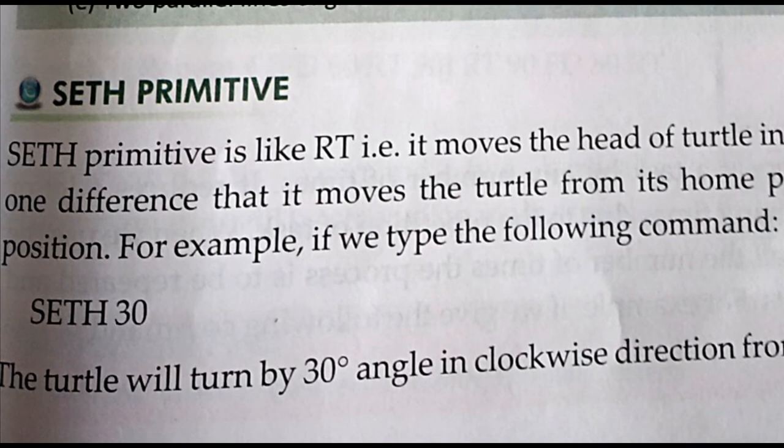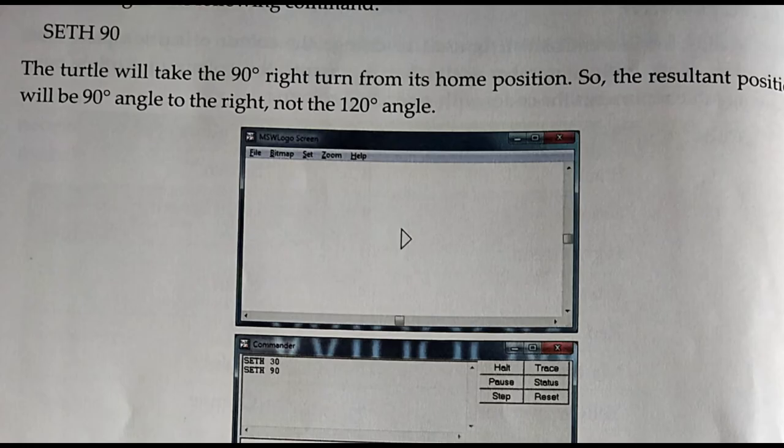SETH Primitive is like the RT command. For example, SETH 30 — the turtle will turn by 30 degree angle in the clockwise direction from its home position. SETH 90 — then the turtle will move 90 degrees to the right.